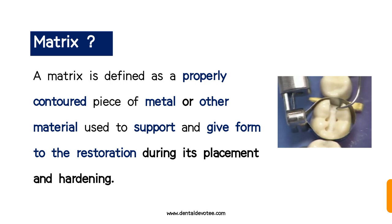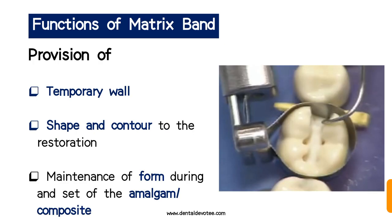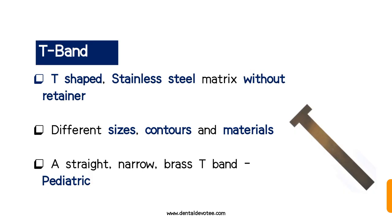For a class 2 restoration, a matrix is placed. The functions of the matrix band are: it provides a temporary wall for the contouring of the restoration, giving shape and contour to the restoration. The matrix band is also used for the maintenance of form during the setting of amalgam or composite.